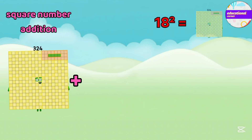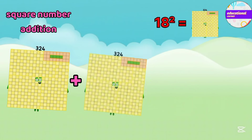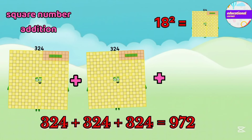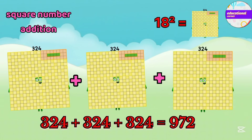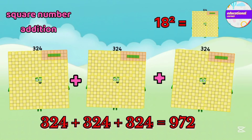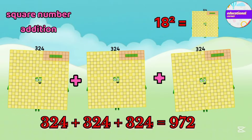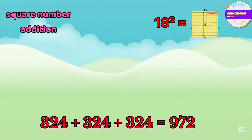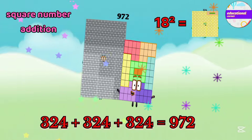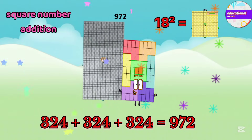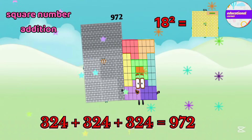The square of 18 is 324. If we add 324 three times, the answer is 972.